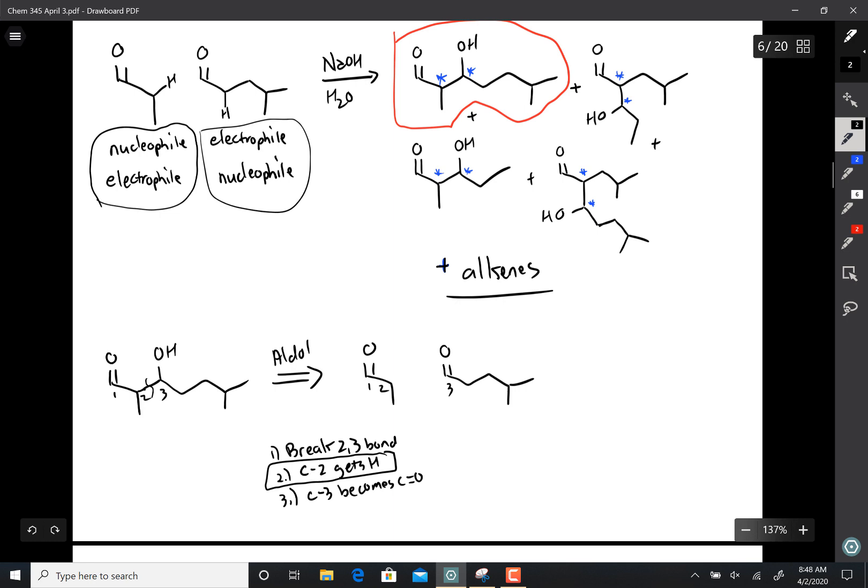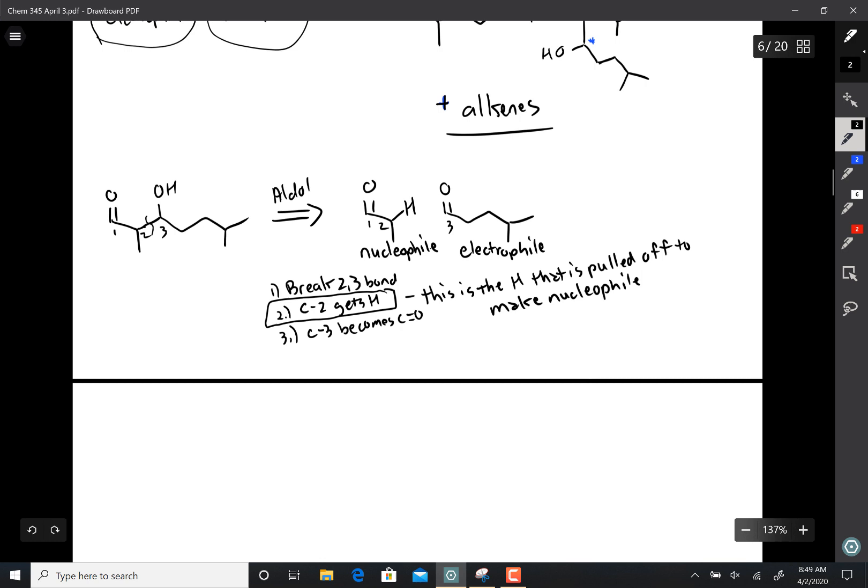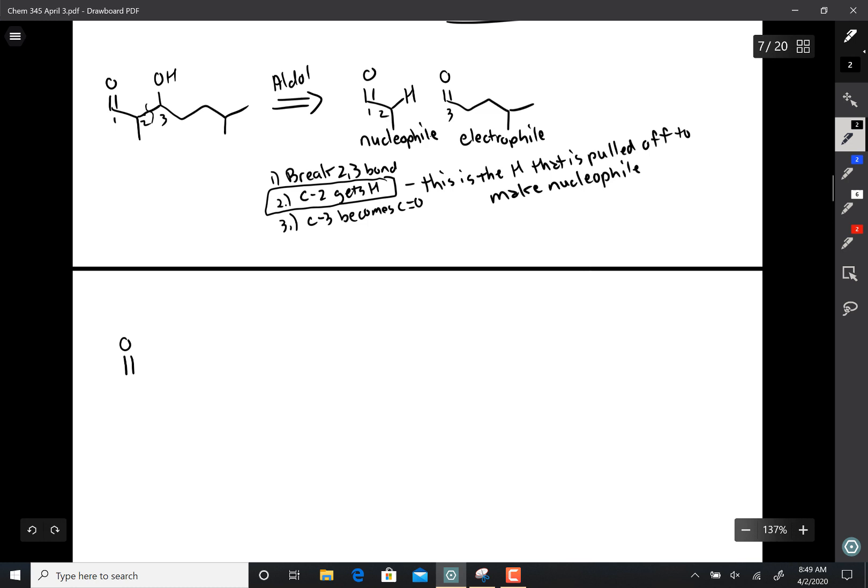Okay, now this step right here is key in the breakdown. Carbon 2 gets your hydrogen. That's this hydrogen right here. Even though we don't draw it a lot of the times, that's the hydrogen that's important. This is the hydrogen that's pulled off to make the nucleophile. And so this breakdown can also be used to help you figure out mechanisms as well. So C2 gets an H, so that hydrogen is what you use. That's the one you want your base to pull off. This molecule right here is your nucleophile. This molecule with C3 is your electrophile.